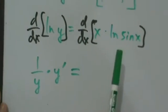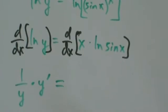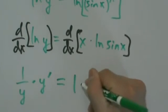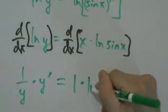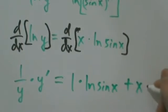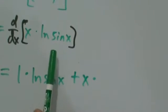Product rule says the derivative of this product is the derivative of the first multiplied by the second, plus the first times the derivative of the second. The second is natural log of sine of x.